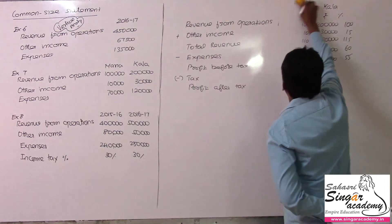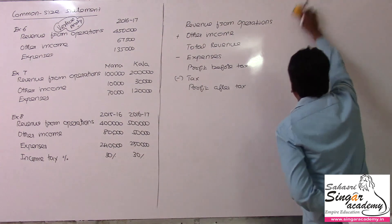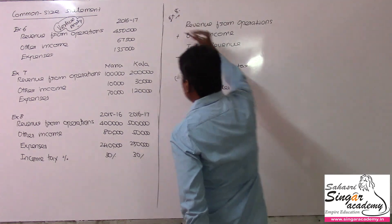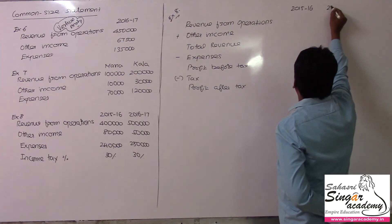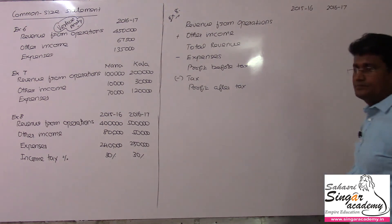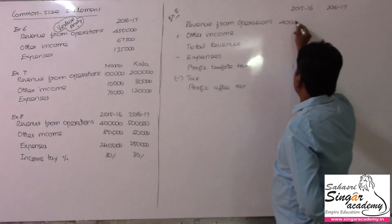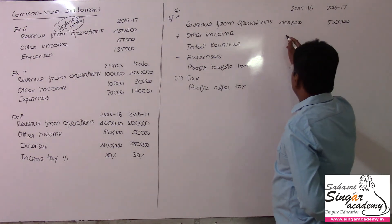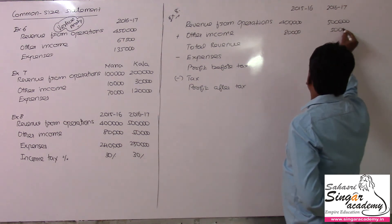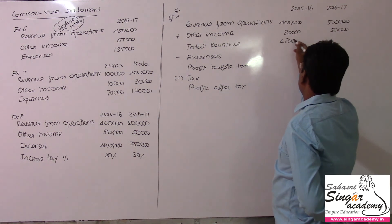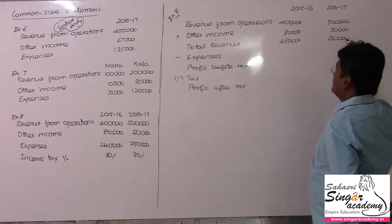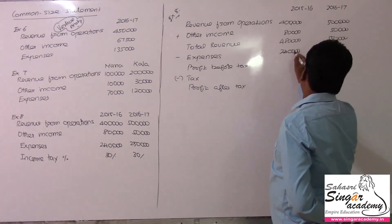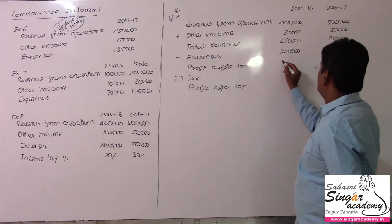Now I am going to work out exercise number 8. Exercise 8 covers 2 years: 2015-16 and 2016-17. Revenue is 4 lakhs and 5 lakhs, other income 80,000, total being 4 lakhs 80,000 and 5 lakhs 50,000. Expenses are 2 lakhs 40,000 and 2 lakhs 50,000. Profit before tax is 2 lakhs 40,000.